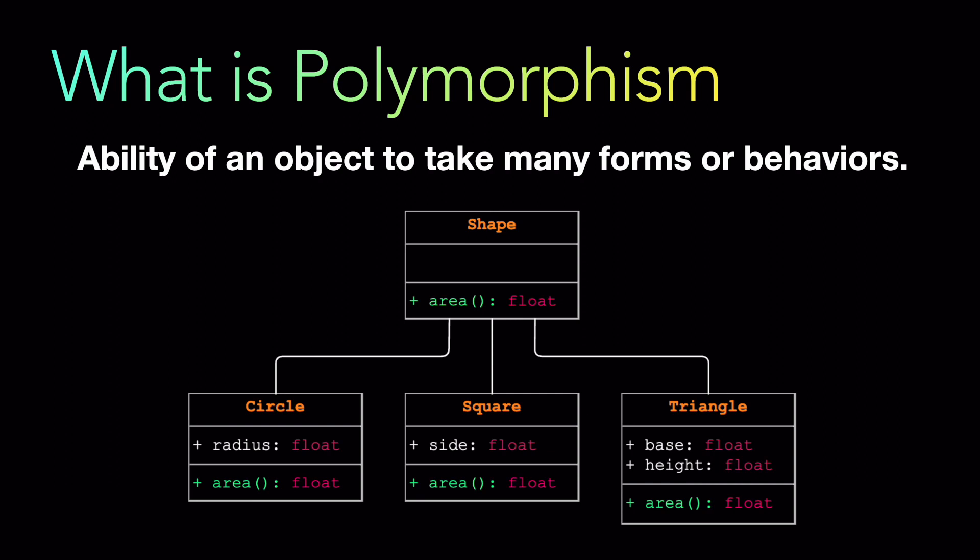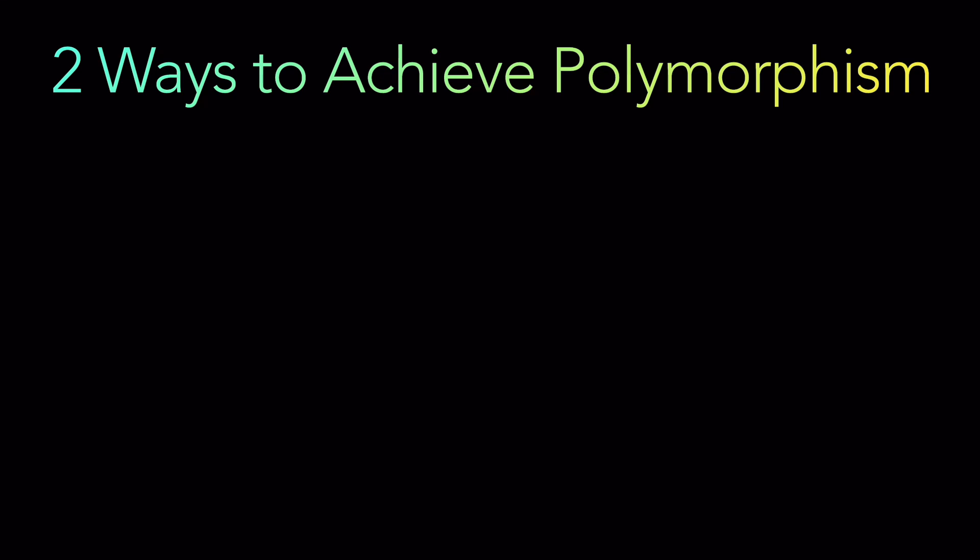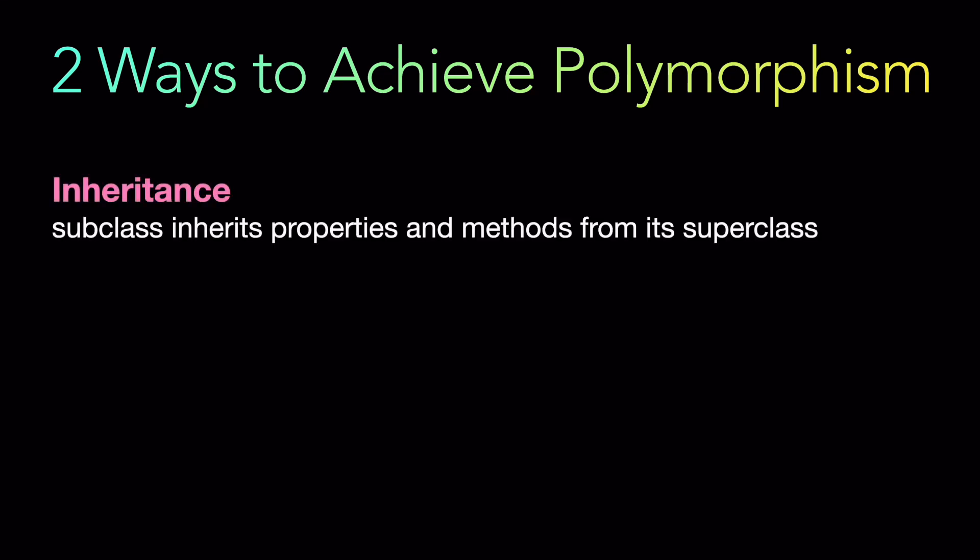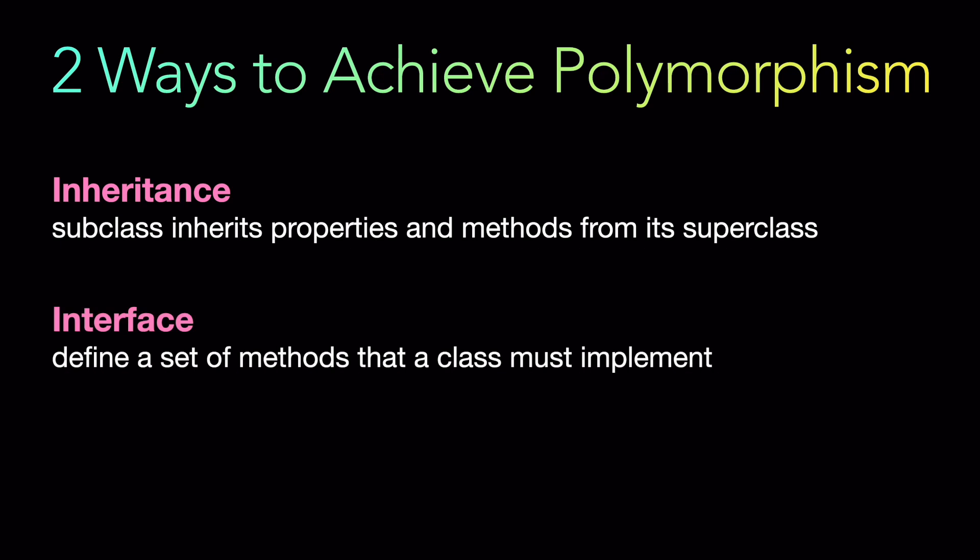There are two ways to achieve polymorphism. One is inheritance — a subclass inherits properties and methods from its superclass, which allows the subclass to behave like the superclass and be used interchangeably with it in your program. The second way is using interfaces. An interface defines a set of methods that a class must implement, which allows different classes to share the same interface and be used interchangeably.